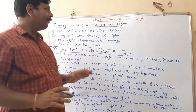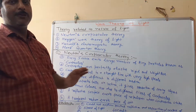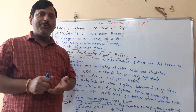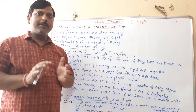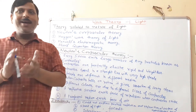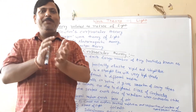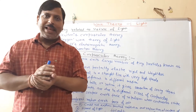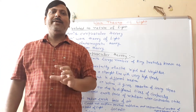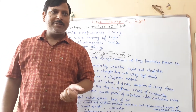Firstly, we are going to discuss Newton's corpuscular theory. The first theory is Newton's corpuscular theory. What is the nature of light according to this theory? It describes the particle nature — how is the particle nature explained?